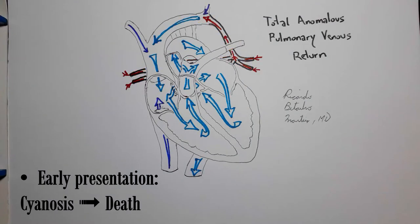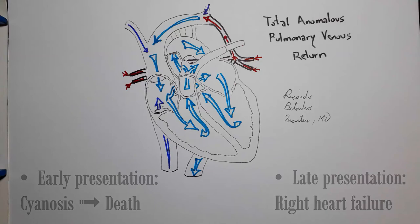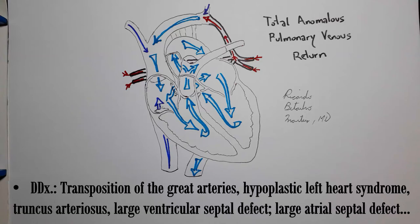Otherwise, the disease may present as right heart failure. Its differential diagnosis includes other cyanotic congenital heart diseases, such as transposition of the great vessels, hypoplastic left heart syndrome, truncus arteriosus, or a large ventricular septal defect. Although in children that survive more than one year, the differential diagnosis is usually with a large atrial septal defect, since many of these other conditions are also lethal.